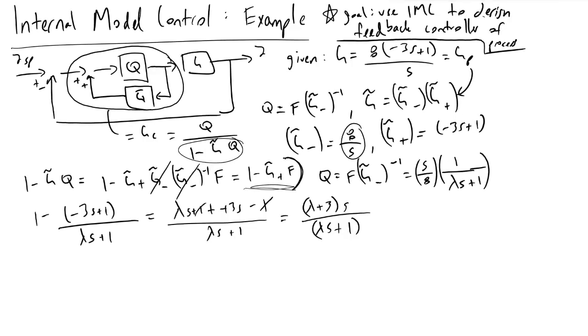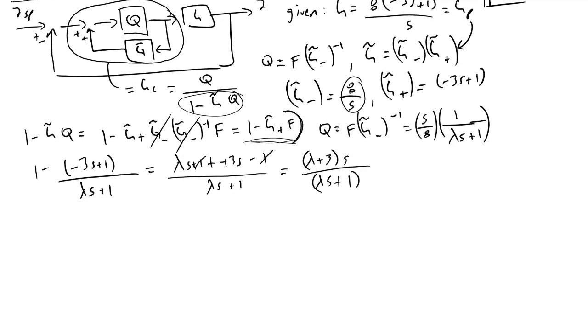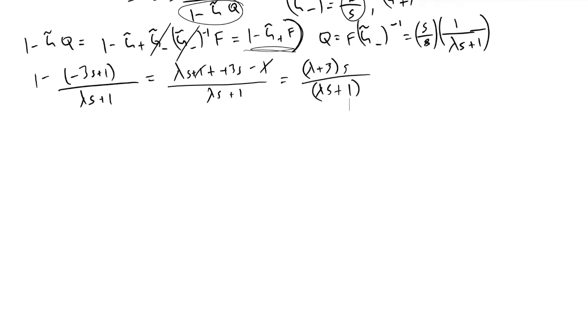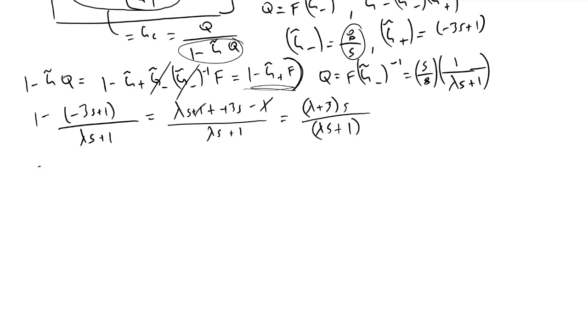And so if we now turn back to what our controller transfer function was, GC, we plug in what we've found for Q,